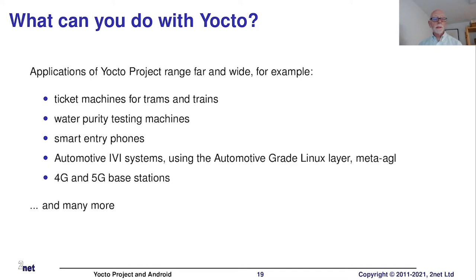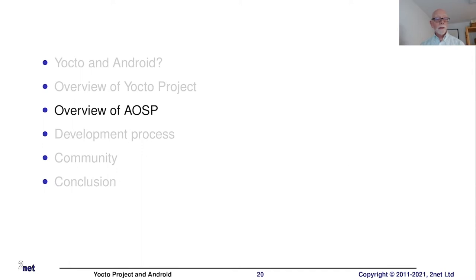With Yocto Project you can, in principle, build almost anything. Some examples I've personally worked on include: a ticketing machine for trams and trains, a water purity testing machine, a smart entry phone device with a touch screen, automotive systems based on AGL, and communications systems including 4G and 5G base stations. These are just a few random examples — there are many, many more.